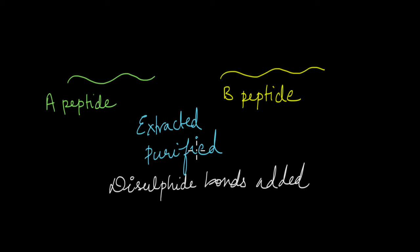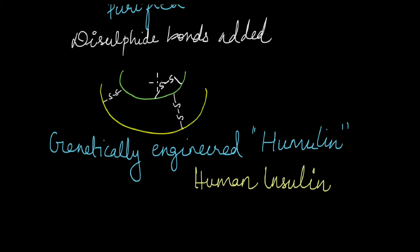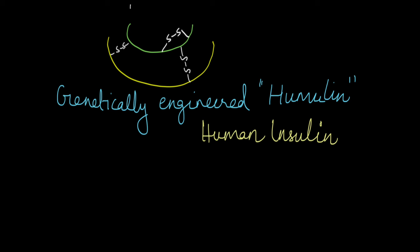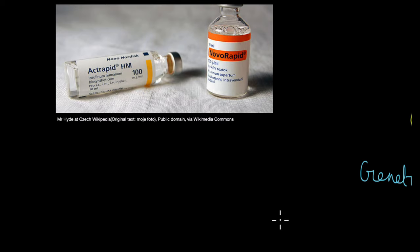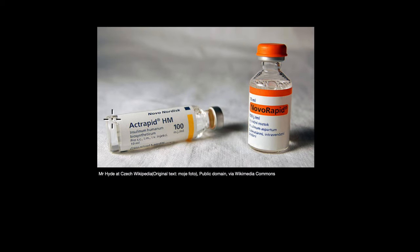Purified because they might have been mixed with a lot of other substances that were not needed. And in the presence of specific catalysts, disulfide bonds formed between the A and B peptides giving rise to the genetically engineered insulin which was also known as humulin because it was genetically engineered human insulin. And then this genetically engineered human insulin humulin was packaged and distributed to diabetic patients all around the world.